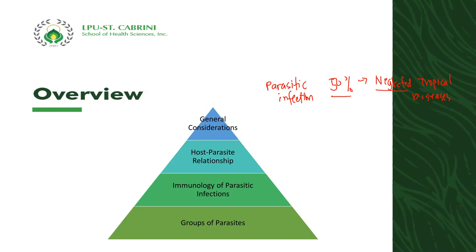For example, elephantiasis caused by filaria is endemic in some places here in the Philippines. But Filipinos, most especially those in poor rural areas, don't have access to appropriate medication. That's why it's being neglected, based on WHO records.